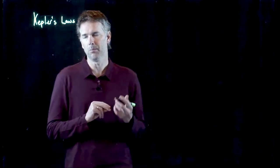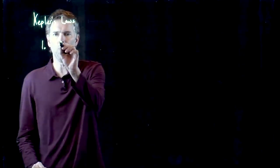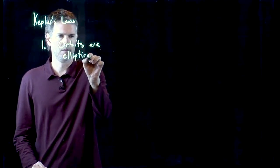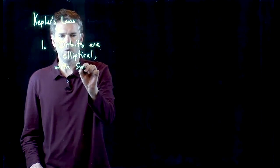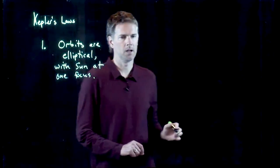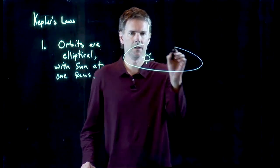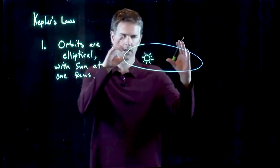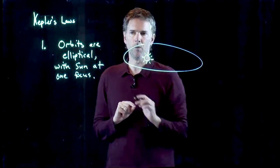The three laws that he came up with we now know as Kepler's laws. The first is that orbits are elliptical, and they are elliptical with the Sun at one focus. So here's our Sun — the planet goes around the Sun like that. The Sun is at one focus of the ellipse. An ellipse has two foci: there's one there and one on the other side by symmetry, and the Sun is at one of those foci.